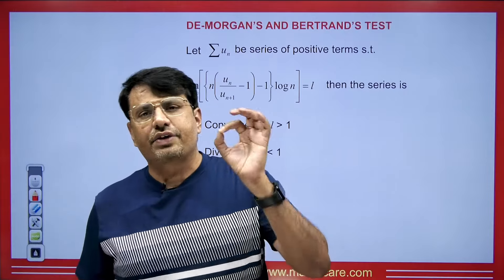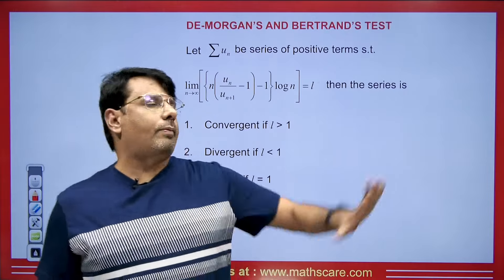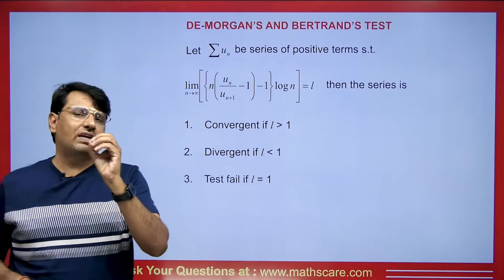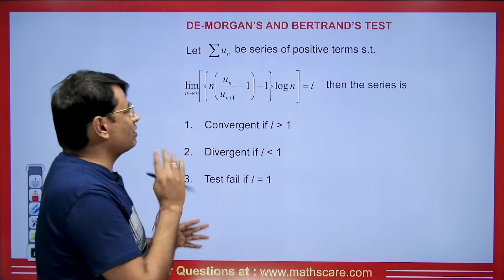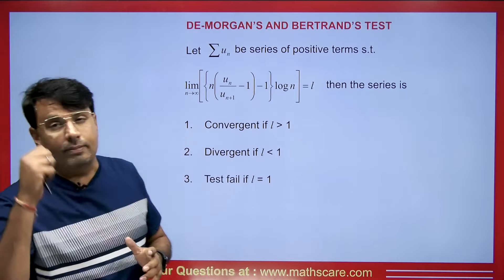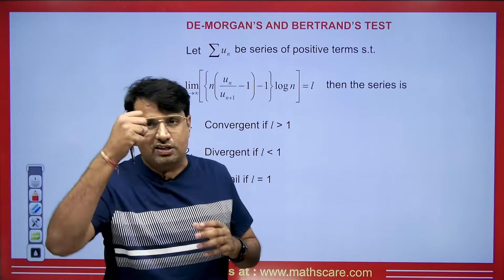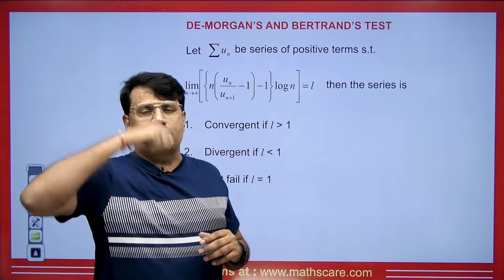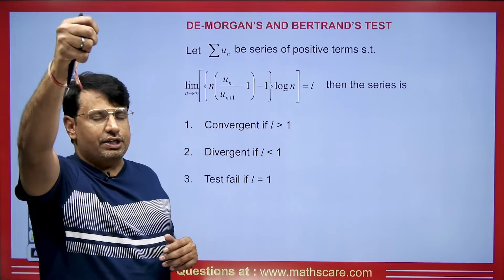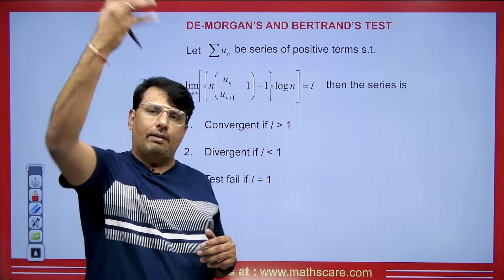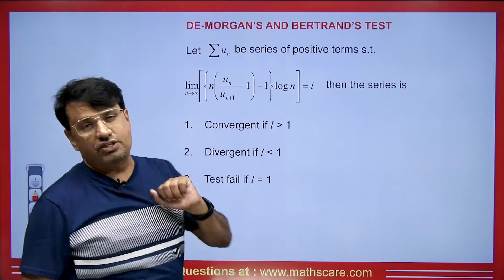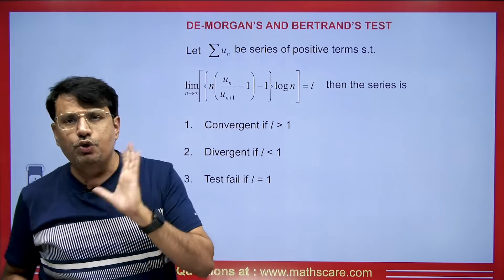If you haven't watched my videos of Infinite Series, you can go to the tab and watch them there. First, if we have any infinite series, we apply the D'Alembert Ratio test. If that test fails, then we use the Rabbe test. If the Rabbe test also fails, then we use the DeMorgan's test.